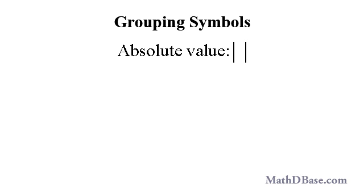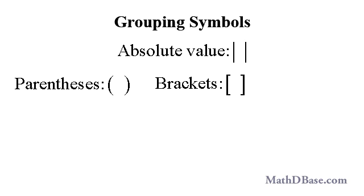Grouping symbols include the absolute value, parentheses, square brackets or just brackets, and curly brackets or braces. Parentheses are more commonly used in math than either brackets or braces, so when a grouping of this type is mentioned, a person might use the word parentheses even though they may mean brackets or braces.